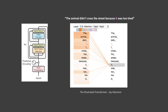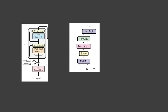An attention head calculates how much each word is related to every other word in the sequence. It takes three input values: query, key, and value. The query represents the word or position for which we want to compute the attention scores — it serves as a reference point to determine the importance of other words. Each word in the input sequence is associated with a query vector. The key provides information about each word that helps establish attention relationships with the query, and each word also has an associated key vector that captures relevant information and characteristics.